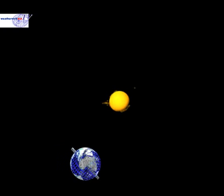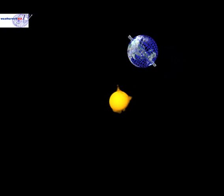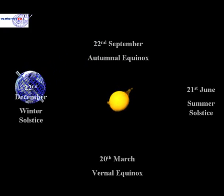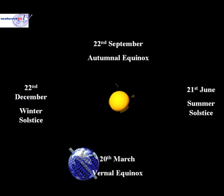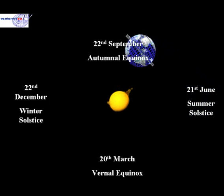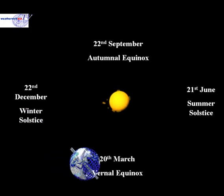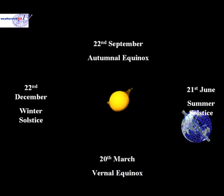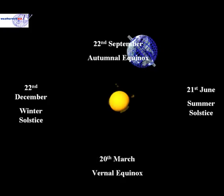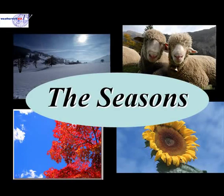So there we have it — the Earth orbiting the Sun on its elliptical orbit. Let's just remind ourselves of the key dates during the year. Remember that these dates relate to the Northern Hemisphere, so the 22nd of December in the Southern Hemisphere will actually be the summer solstice. That completes our look at the seasons. Thank you for watching.